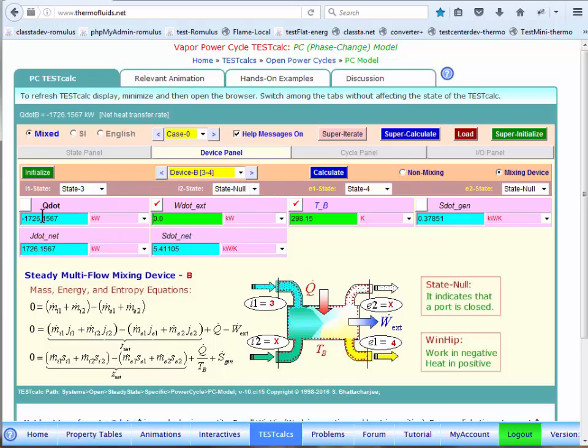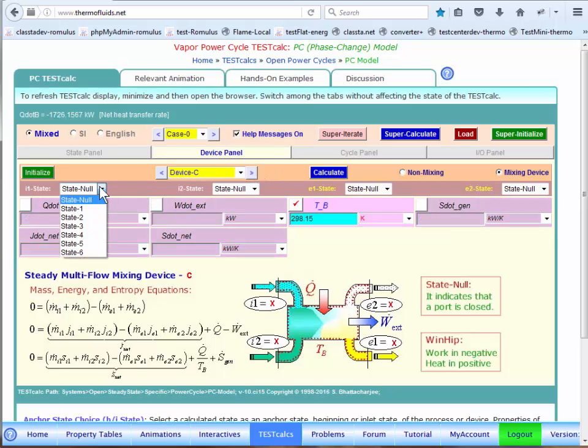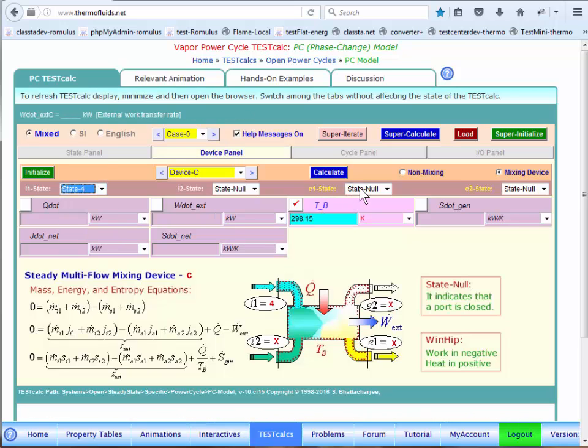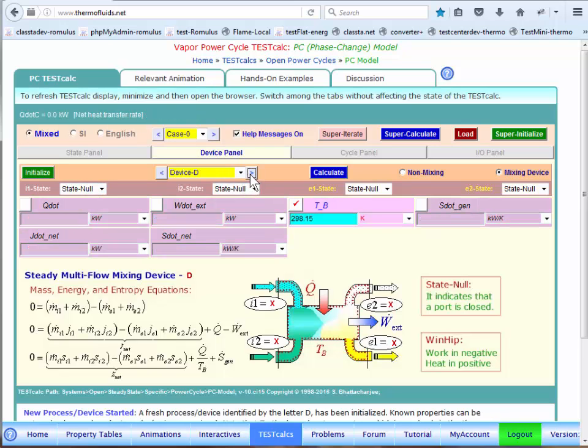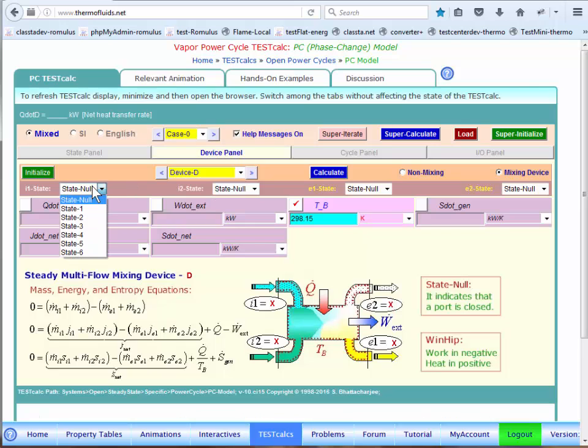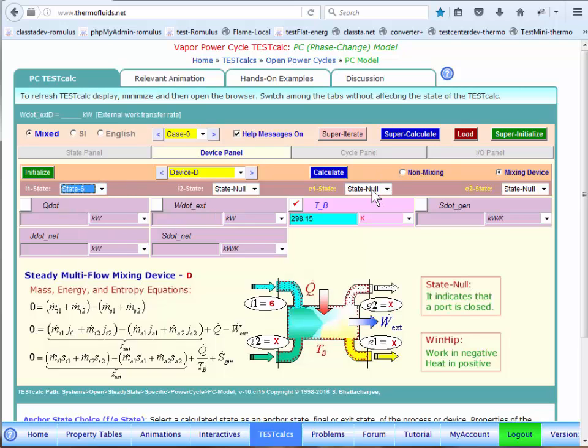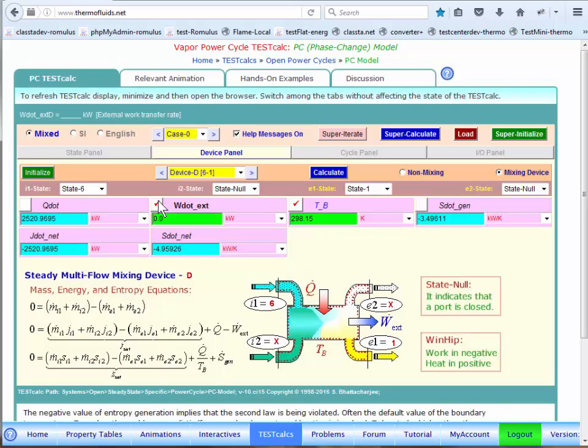The negative sign means heat is rejected from the condenser. Now, device C is the pump, so we have 4 as pump inlet, and 6 as the actual pump exit. There is no heat transfer in adiabatic pump, so the pump work has been found. Finally, device D is our boiler. We have the inlet state is state 6, exit state is state 1, and the boiler, there is no work, no external work, so we have found Q dot. All the devices have been calculated, A, B, C, D.